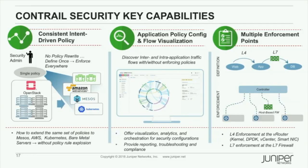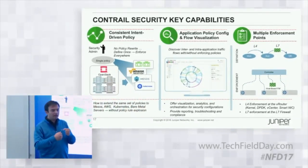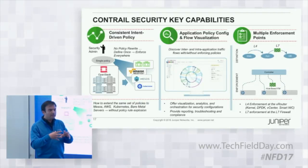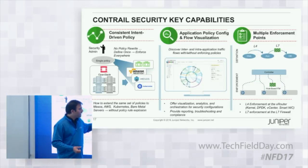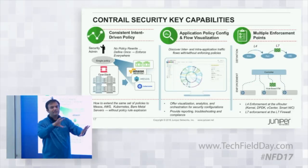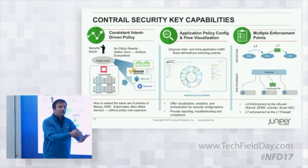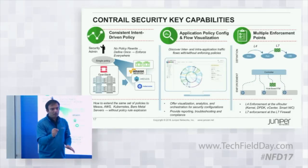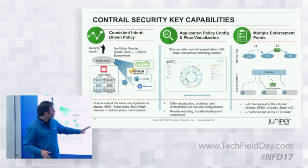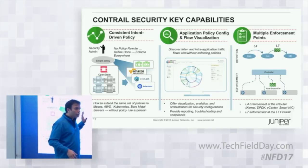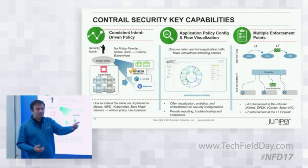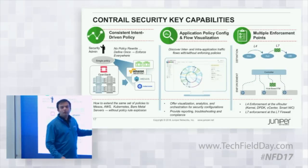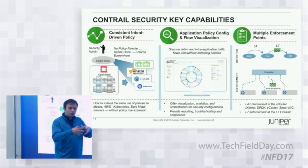Point number two: with Contrail Networking, we did a good job showing network topology. However, in the developer-centric, application-centric world of today, customers want to visualize the security posture vis-à-vis the application topology — not network topology. That's the goal of pillar two visualization: show application topology and leverage application attributes to describe security intent.